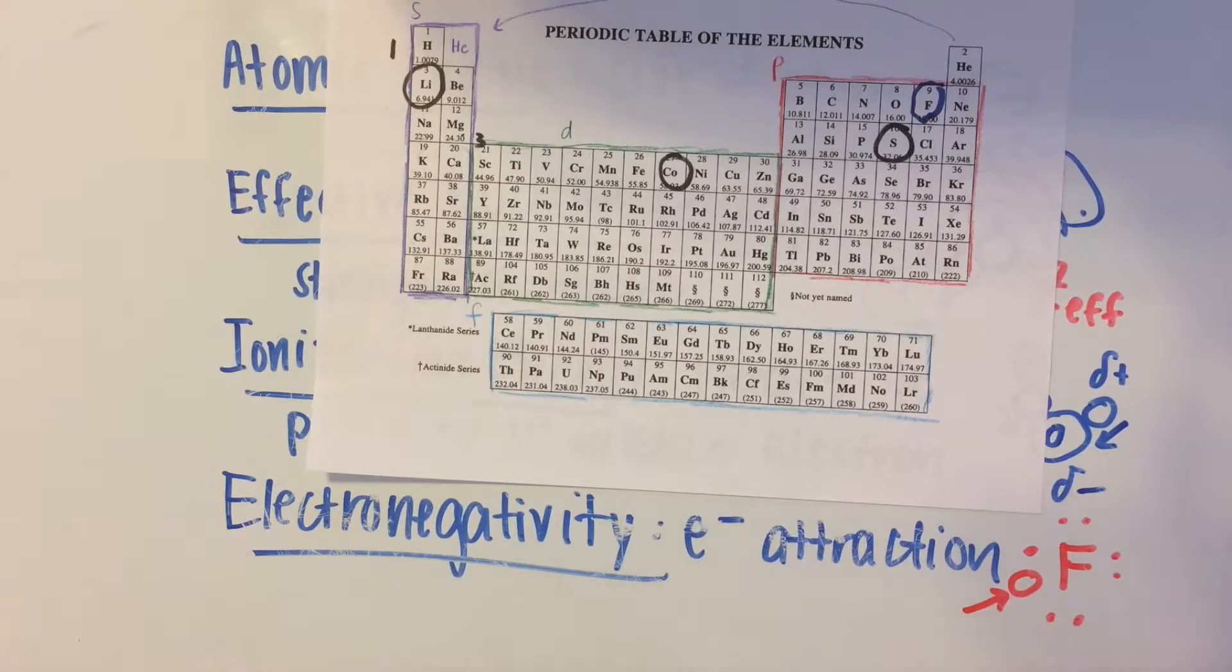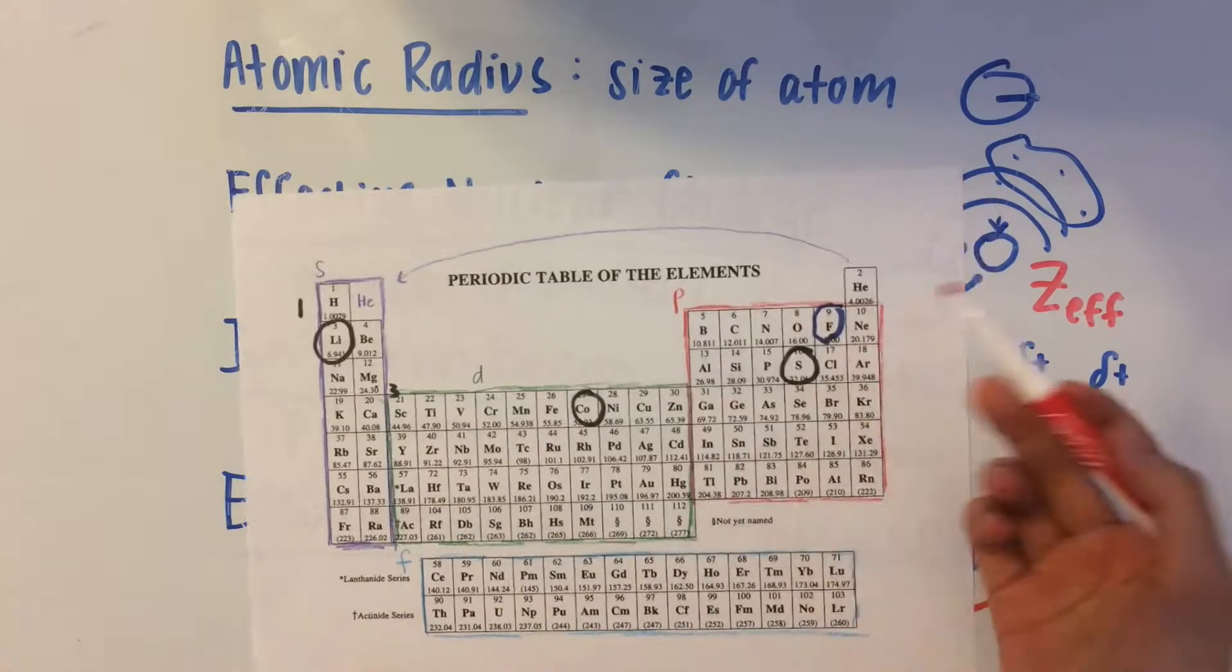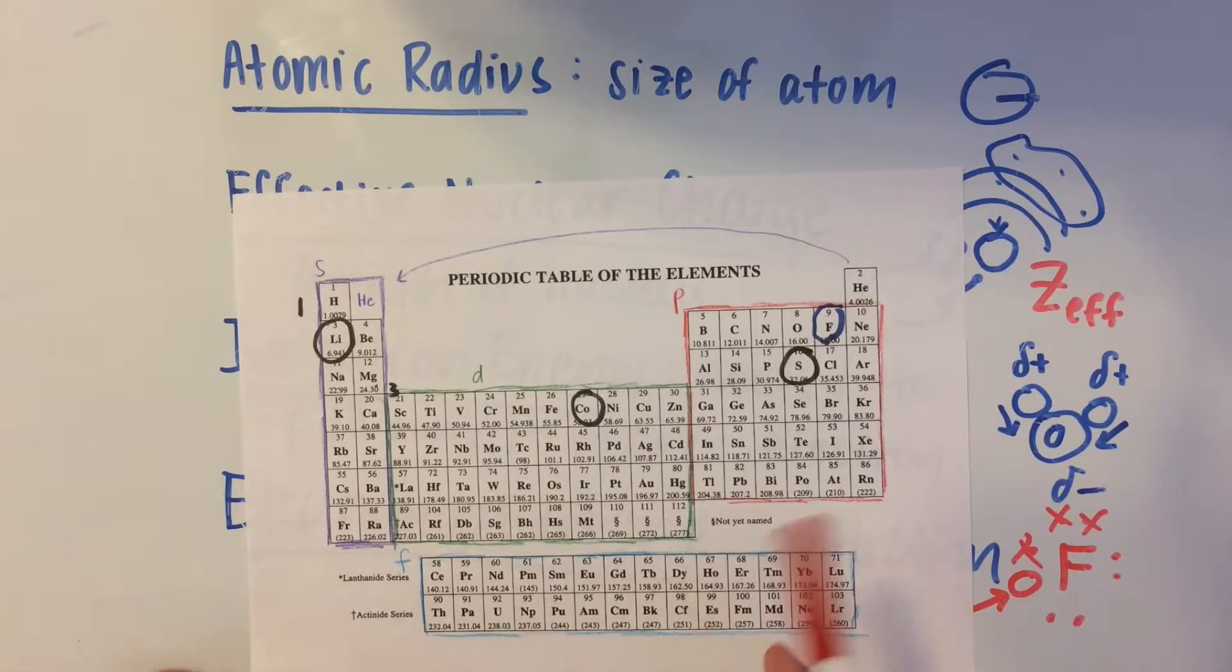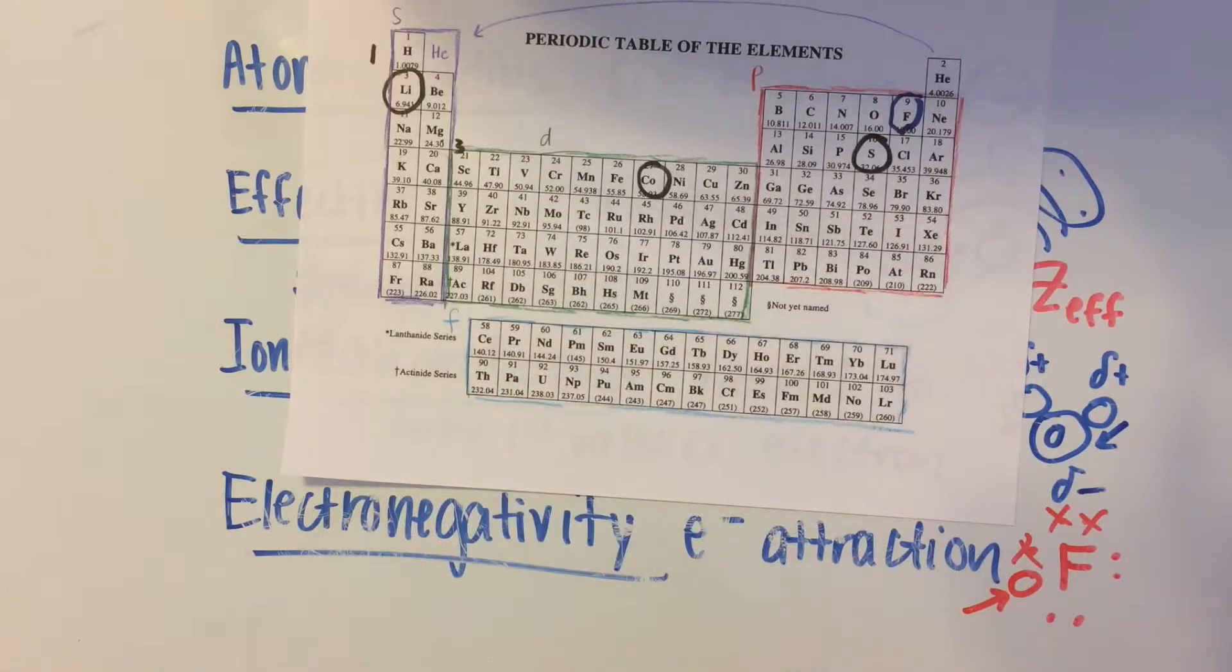So it really wants to get another electron, and it doesn't want to lose any of these electrons. It doesn't want to give any of its electrons away. So it's going to be really tough to get its valence electron out, which is why you need a lot of energy to pull away its first valence electron.